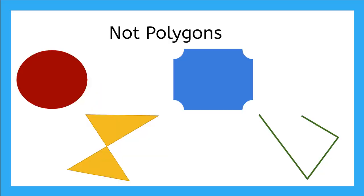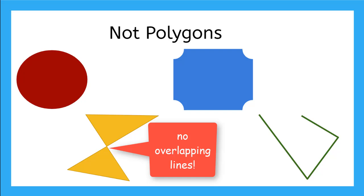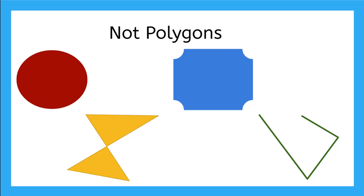These figures are not polygons. The red and blue shapes have curved lines. Polygons do not have curved lines. The yellow figure has lines that intersect or cross each other. Polygons do not have lines that overlap. And the outline of the green figure is not closed. Notice that the lines are not connected at a vertex.